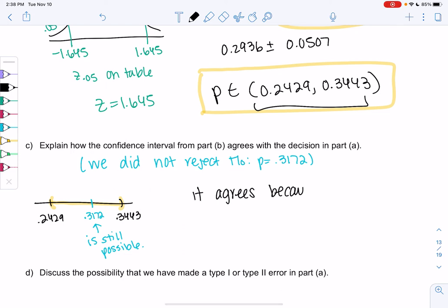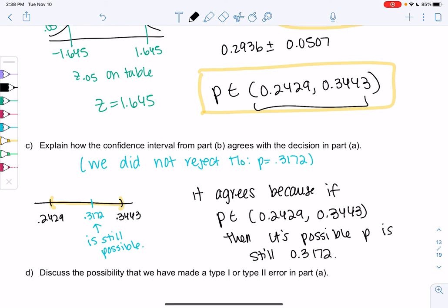It agrees because if P is in 0.2429 up to 0.3443, then it's possible P is still 0.3172, meaning the program didn't do anything. Do we know that it equals that? No, we just know any number in this interval is possible.